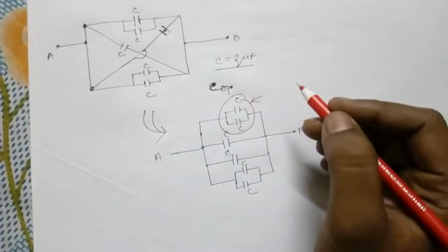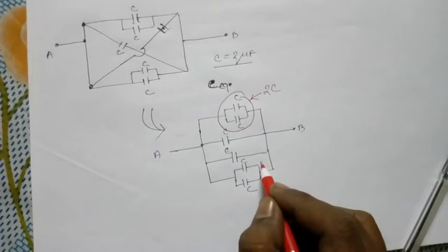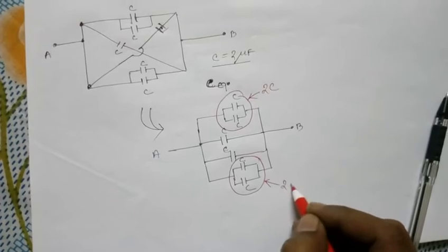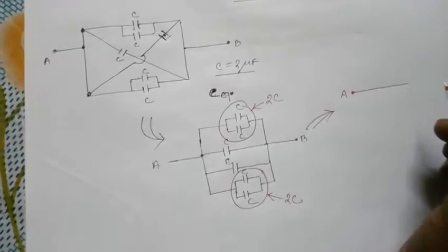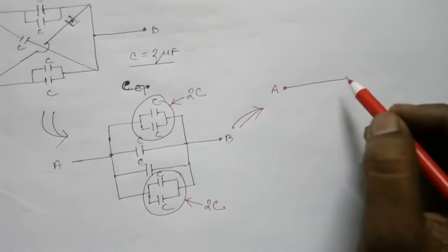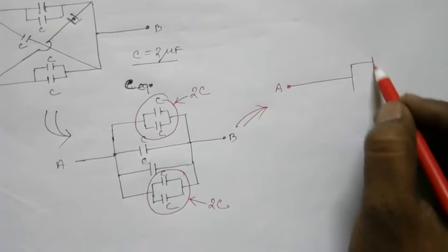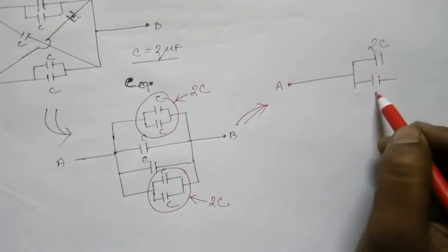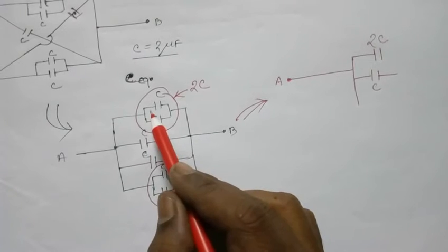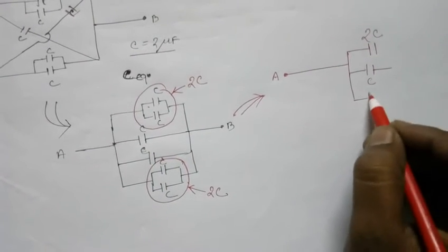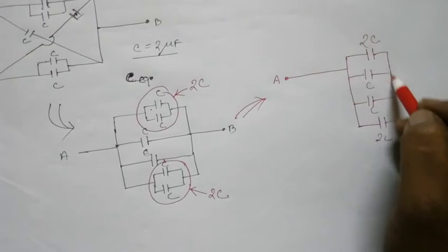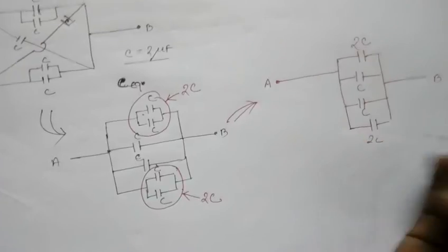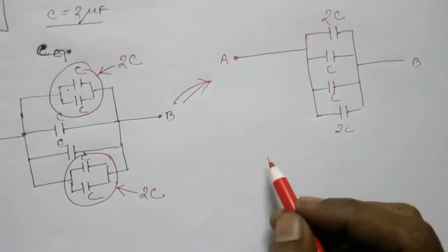The equivalent capacitance of those parallel capacitors is C plus C, so twice C. The equivalent capacitance of the other pair is also twice C. The final redrawn circuit looks like: A — 2C — C — 2C — C — C — 2C — joined together.